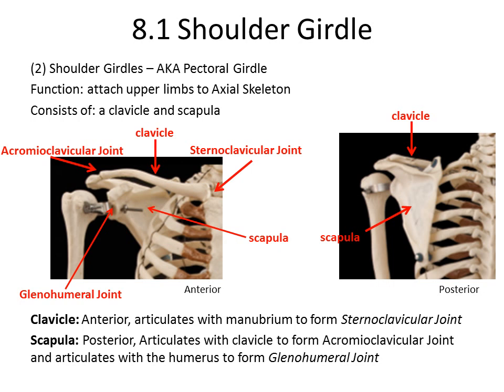Let's begin with the shoulder girdle. We have two shoulder girdles, left and right sides, also known as the pectoral girdle. Their function is to attach the upper limbs to the axial skeleton. The shoulder girdle consists of two structures: the clavicle and the scapula. Looking at an anterior view, we have the sternum connecting to the clavicle via the sternoclavicular joint, the clavicle moving laterally and attaching to the scapula via the acromioclavicular joint, and the scapula attaching to the humerus via the glenohumeral joint.